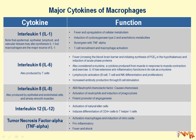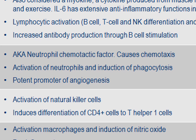Interleukin-6 also increases antibody production through B-cell stimulation. The next interleukin is interleukin-8, which is also produced by epithelial and endothelial cells and by airway smooth muscles. Another name — actually the more descriptive term — for interleukin-8 is neutrophil chemotactic factor, which also tells us about its function. Interleukin-8 causes chemotaxis in neutrophils and attracts them to the site of inflammation or injury by pathogens.